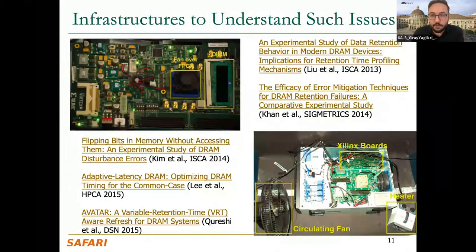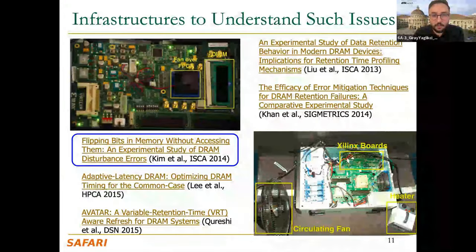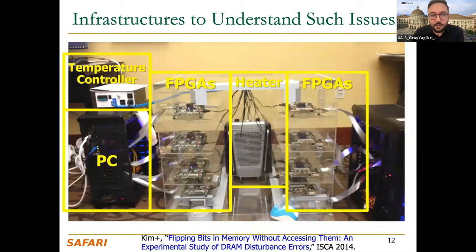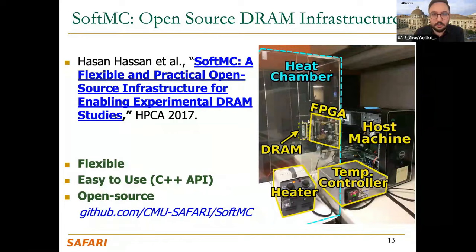To understand the DRAM scaling problem better, we need testing infrastructure. I'm going to discuss the 'Flipping Bits' paper from ISCA 2014. The infrastructure used in that paper provides a temperature-controlled environment for testing DRAM modules. We later open-sourced this infrastructure — it's available online and can be downloaded and run on your FPGAs.